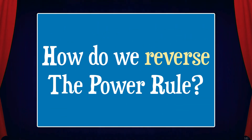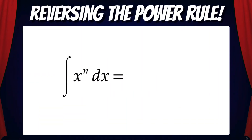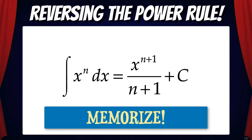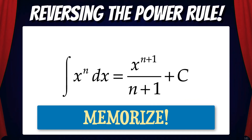This brings up a great question: how do we reverse the power rule? In other words, what's the integral of xⁿ dx? You may have noticed a pattern in the previous two examples. What we did was raise x to the n+1 power, divide by n+1, and then add c. This is something you'll want to memorize, because you're going to use it all the time when finding indefinite integrals.